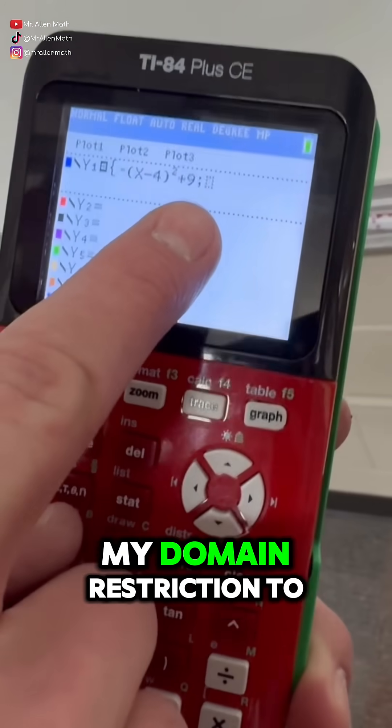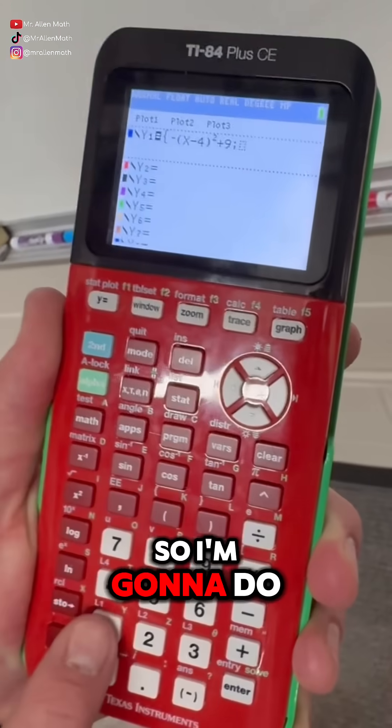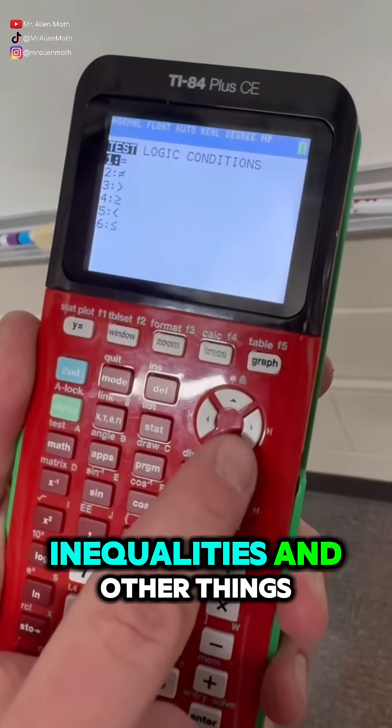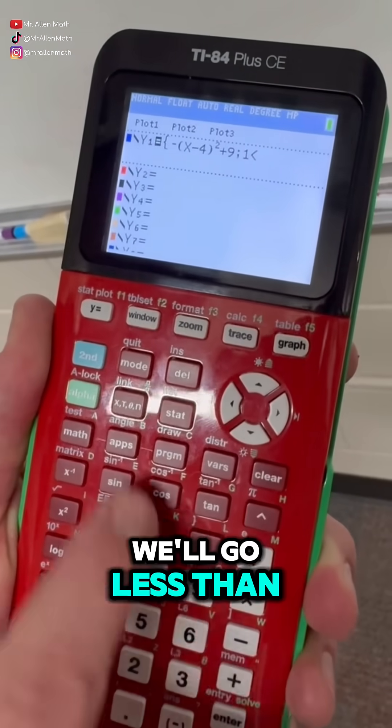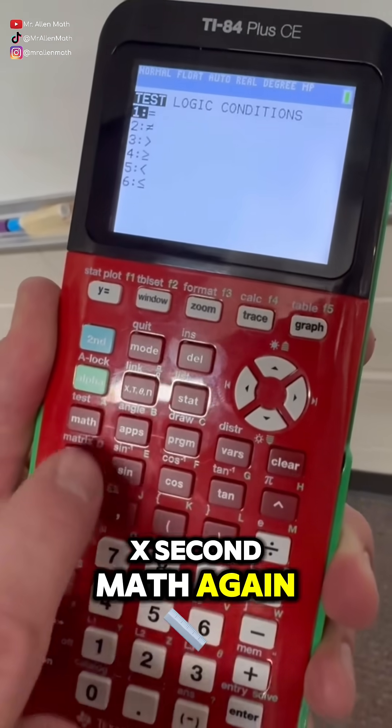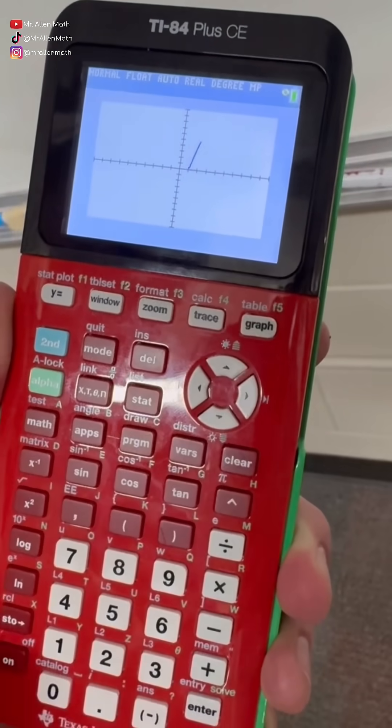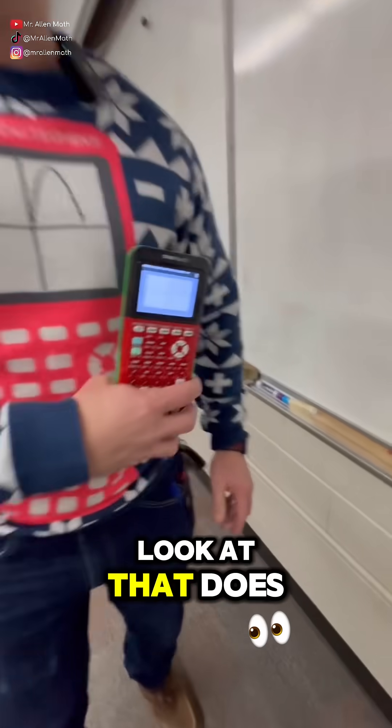Now I gotta do my domain restriction to cut this thing off. So I'm gonna do one and then we're gonna hit second math, which brings up my inequalities and other things. We'll go less than X, second math again, I'm just gonna hit five this time. And then we're gonna do a seven there for the upper. Let's hit graph. Look at that.